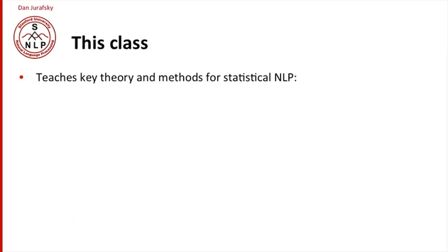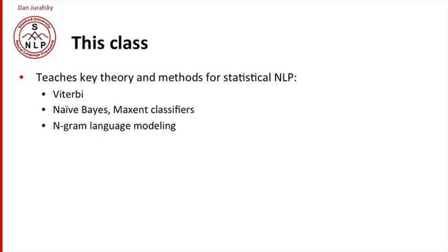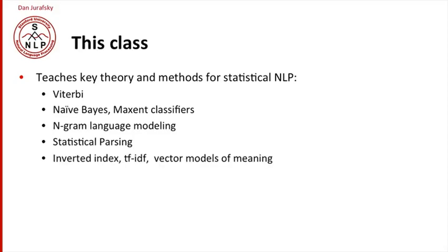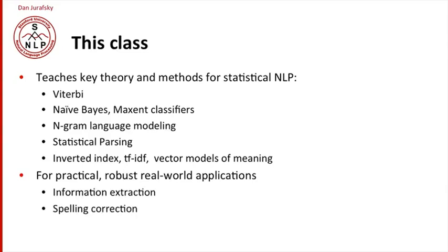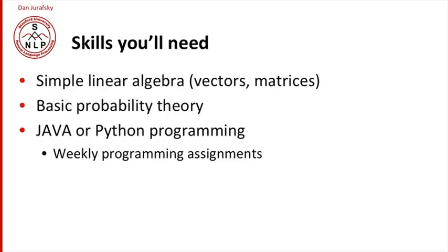Our goal in the class is teaching key theory and methods for statistical natural language processing. We'll talk about the Viterbi algorithm, naive Bayes, and Maxent classifiers. We'll introduce n-gram language modeling and statistical parsing. We'll talk about the inverted index, TF-IDF, and vector models of meaning important in information retrieval. And we'll do this for practical, robust, real-world applications — information extraction, spelling correction, and information retrieval. The skills you'll need: simple linear algebra — knowing what a vector and matrix are — basic probability theory, and the ability to program in either Java or Python, because there'll be weekly programming assignments with your choice of languages.